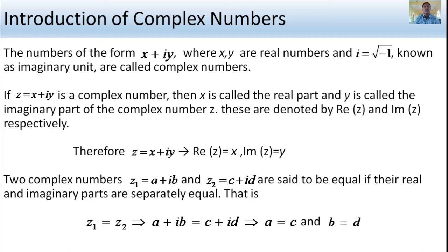Two complex numbers z1 equals a plus ib and z2 equals c plus id are said to be equal if their real and imaginary parts are separately equal. So if z1 equals z2, that means a plus ib equals c plus id.